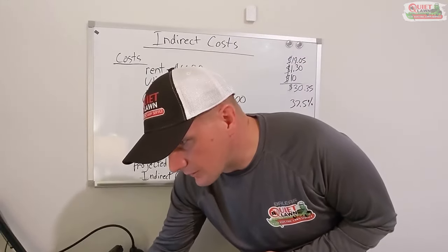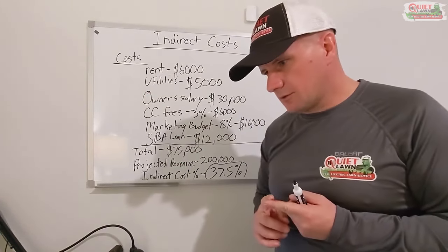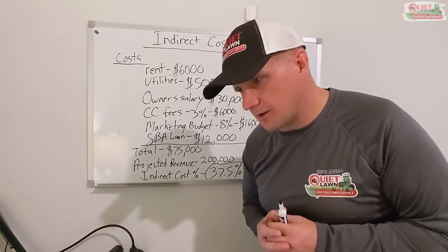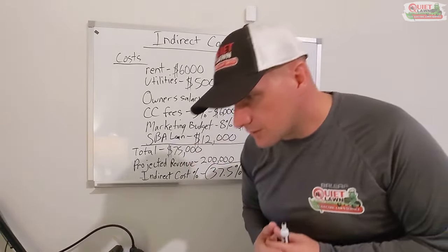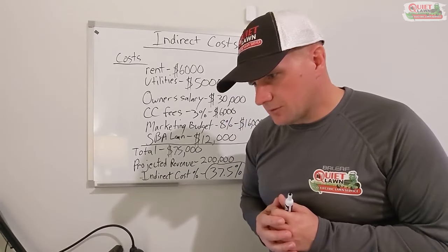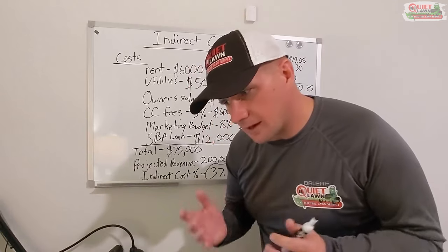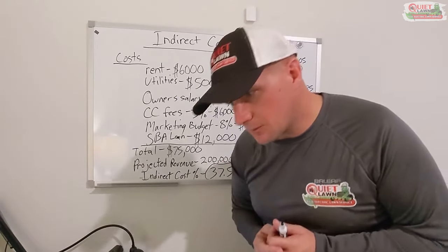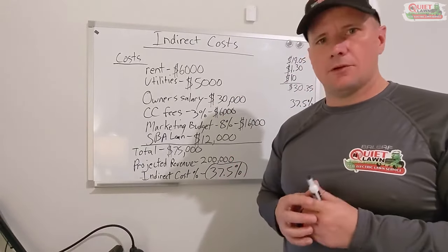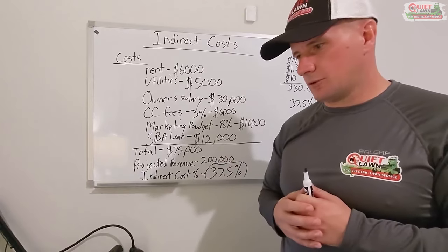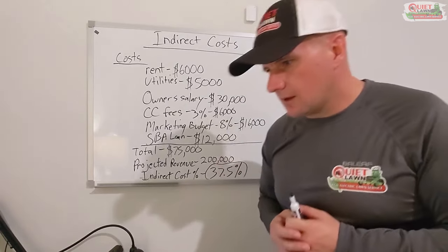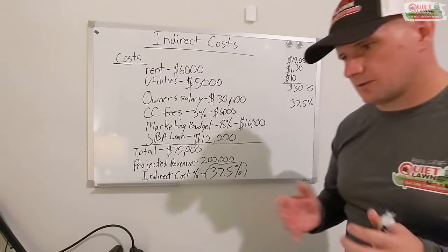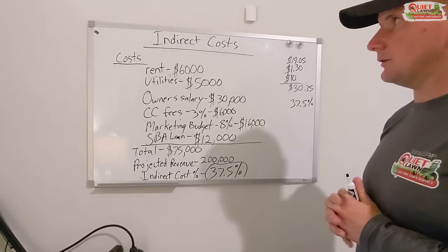Just to give you some ideas — that would be your liability insurance, any other salaries like a maintenance person, any other loans like SBA loans, company credit cards, cell phones, bank fees, any vehicle expenses for vehicles not already accounted for in direct cost, education and training — like going to conferences or paying guys to do training, credit card processing fees, and pretty much anything else that's not a direct cost.